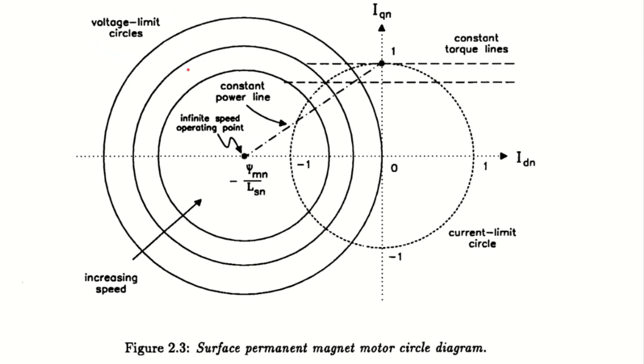And the second is the voltage limit. We can see several voltage limit circles here. Each circle signifies a different supply voltage or speed. The smaller the circle is, the higher the speed, or the lower the supply voltage. The voltage limit circles may also be ellipses in different motor types.